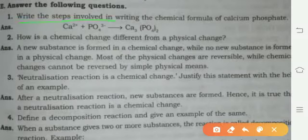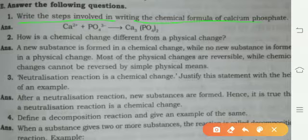Next question: Write the steps involved in writing the chemical formula of calcium phosphate, Ca3(PO4)2.